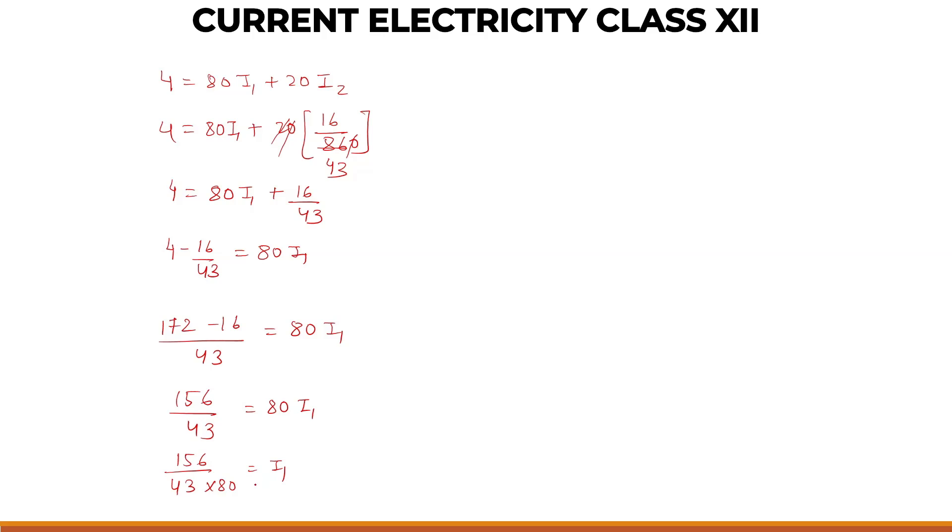Let me write here, I1 equals 156 divided by 3440. You can simply multiply, it is 24 times 80 gives 3440.